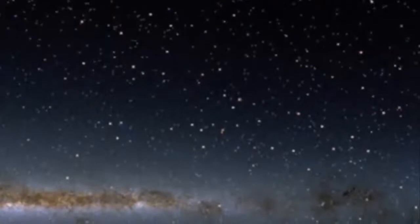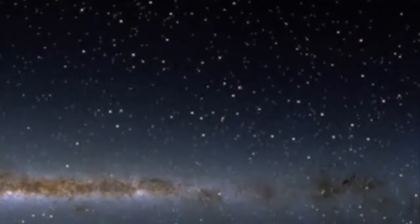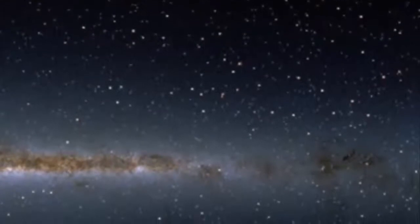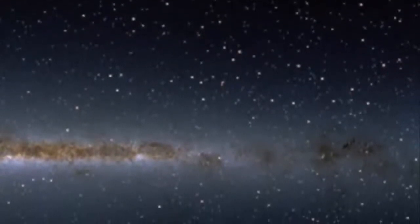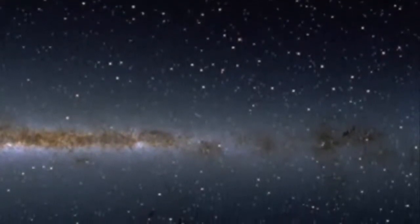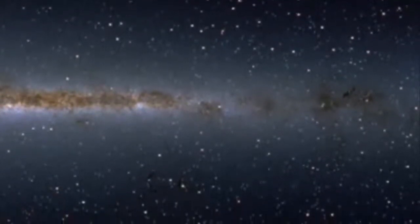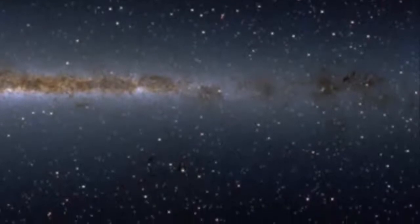Most galaxies contain a supermassive black hole at the center, and our Milky Way is no exception. Sgr A* resides in the Milky Way's bulge and has a mass equivalent to 4.5 million solar masses. Today, Sgr A* is relatively quiet, accreting slowly as the galaxy ages.